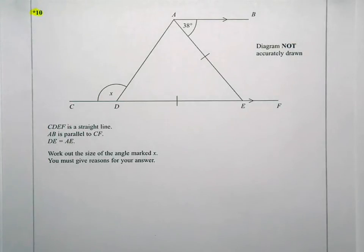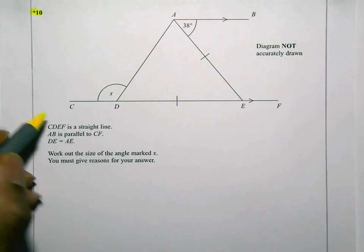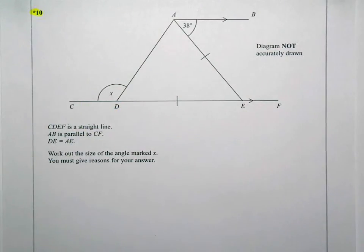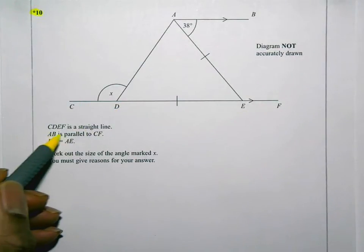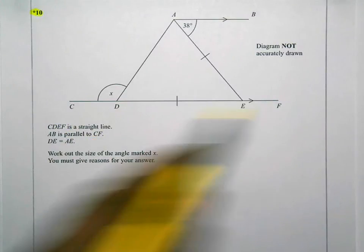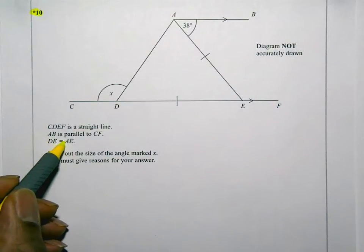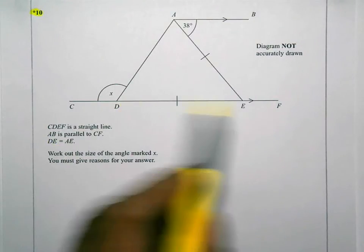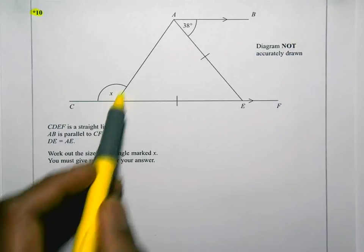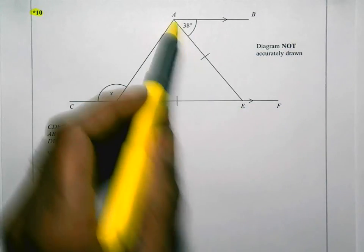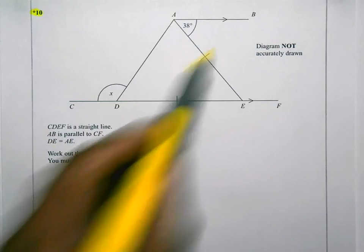Okay, what I need to do is read through the question, think about what they're asking, and start working through it. CDEF is a straight line. AB is parallel to CF. DE is equal to AE. So those two lines are equal. That's what these little lines on them indicate.